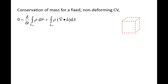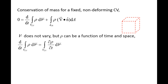The time rate of change of mass in the control volume plus the net flux of mass across the control surface is equal to zero. The first term is the time rate of change of the integral rho dV, where the limits of integration are the entire control volume. Since the control volume is fixed and non-deforming, the limits of integration are constant in time, allowing us to move the time derivative into the integral. The first term becomes partial rho partial t times the differential volume dV, integrated over the entire control volume. We had to change the full derivative to a partial derivative because density can be a function of both time and space.